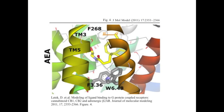Here we can see an illustration of anandamide binding to the same CB1 receptor. The alkyl tail of anandamide associates with the phenylalanine residue F268 through sigma-pi interactions. Its polar component is located between the transmembrane helices 3, 4, and 5, near a threonine and glutamate residue.